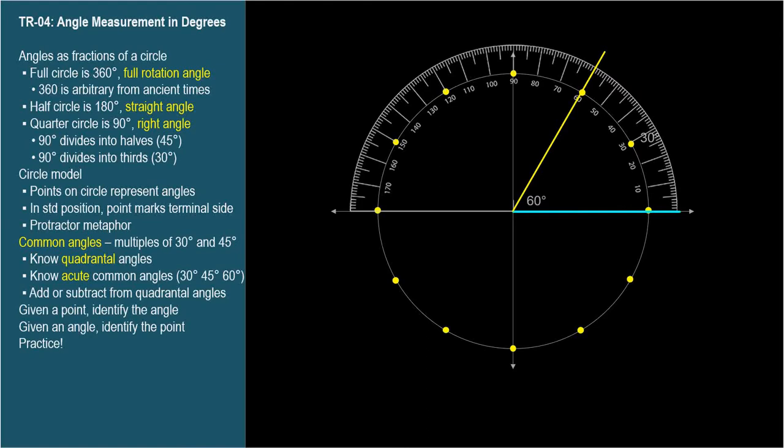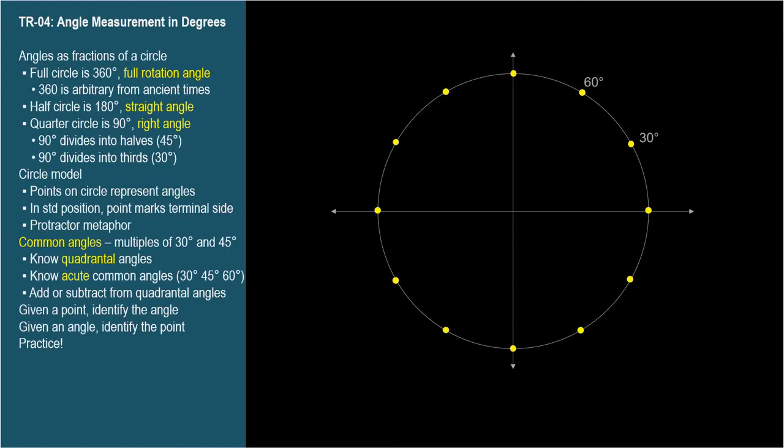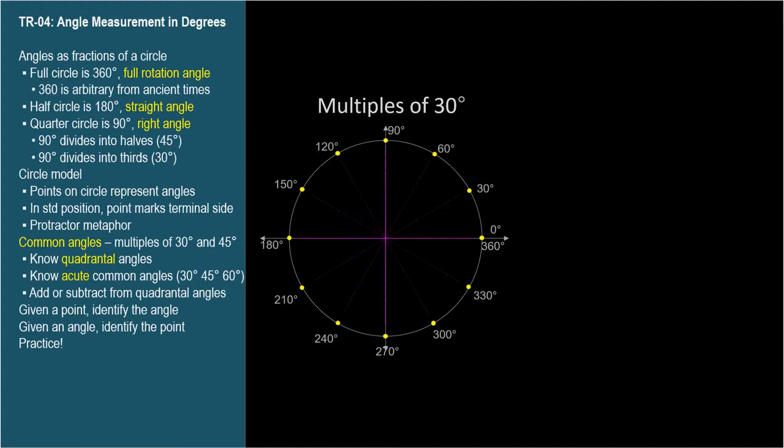There are an infinite number of angles around a circle, but there are some common angles that every trigonometry student needs to know. In fact, they're often called the common angles. There are the multiples of 30 degrees all the way around the circle. You need to know these.